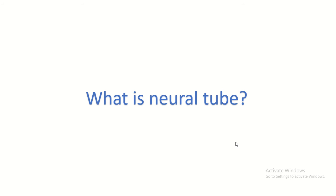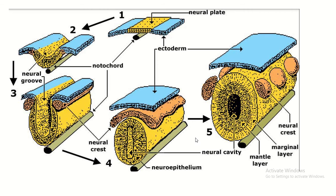In this video I discuss what is the neural tube and how it is formed. This is the ectoderm — a thickening is formed at the ectoderm, and this is known as the neural plate.